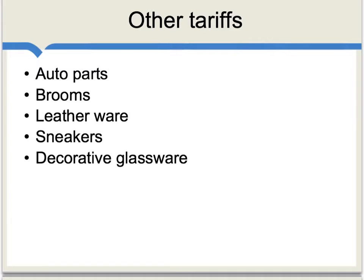As for non-agricultural products, in the United States you can find noticeable tariffs on auto parts, brooms, leatherware, sneakers, and decorative glassware, among other examples. The analytic question, of course, is what do all these have in common? And on that we have only partial answers.